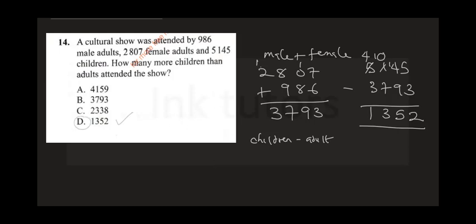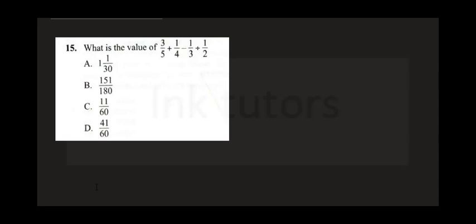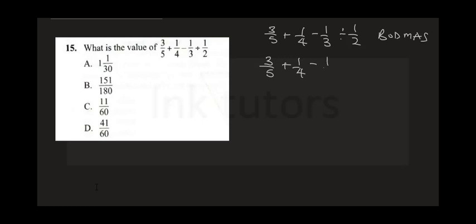Question 15 says: what is the value of 3/5 plus 1/4 minus 1/3 divided by 1/2? We apply BODMAS, so we do division first. This gives us 3/5 plus 1/4 minus 1/3 times 2/1.